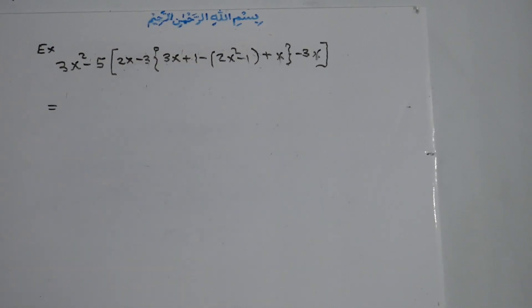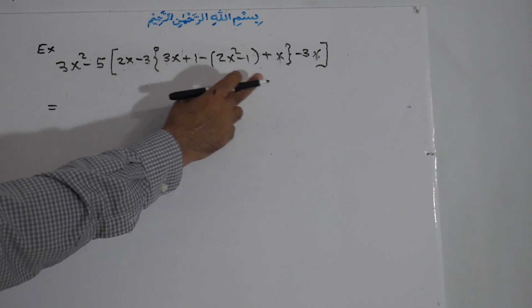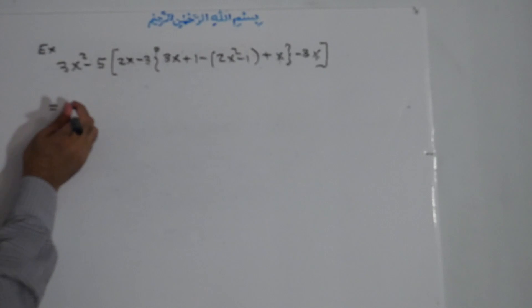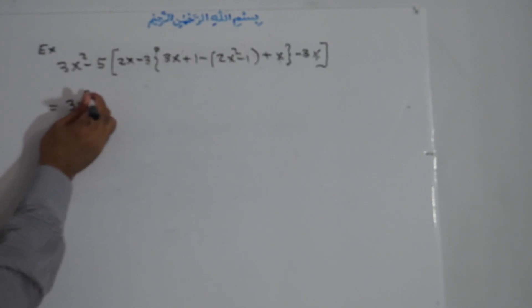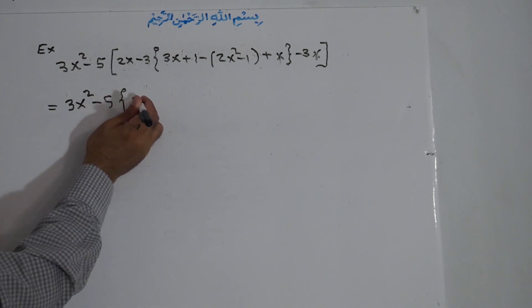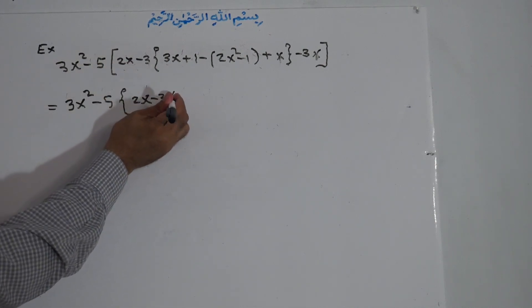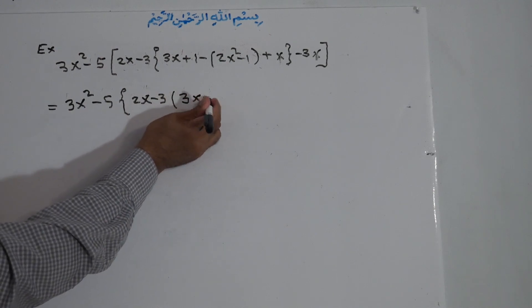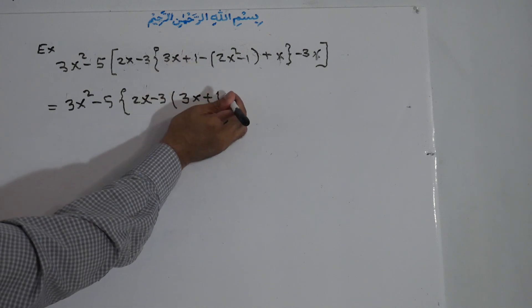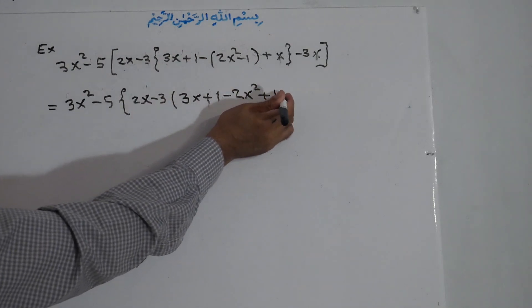First we simplify inside the small bracket, but there are no like terms, so it is already simplified. We remove it and multiply the negative sign to all terms inside. We write 3x² minus 5. The big bracket changes to medium, giving: 2x minus 3, and the medium changes to small: 3x plus 1. Then negative times positive is negative 2x², and negative times negative is positive 1, plus x.